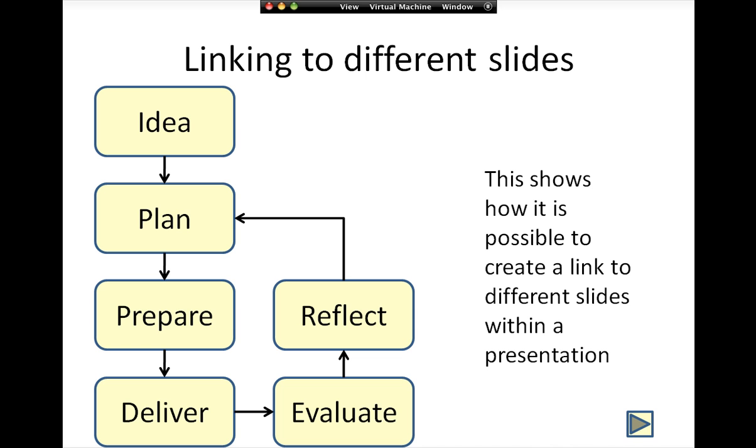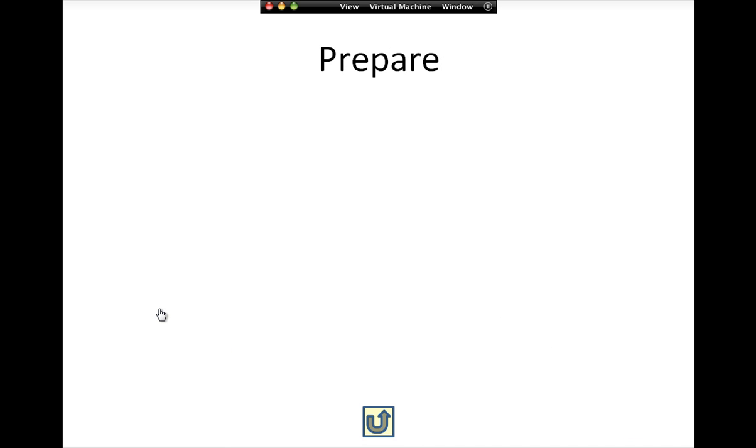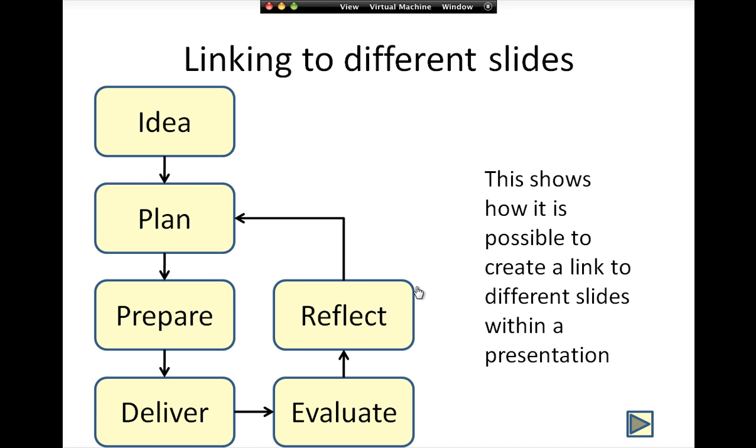Other things that we can do is we can link to different slides within the presentation. Now here's the diagram that I used in an earlier sequence of presentations. And what I've got here now is I've made a hyperlink from each of these boxes. So if I click on the prepare box, it will take me to a slide for prepare. Now I've not got any information here. You'd obviously add your own text or your own additional images. I'm just showing the mechanism working. And having gone here, I then need to go back, so I've got a back button. I can then look at say reflect, and I can go back. And the beauty of this is that we make our presentations not linear, so you can follow things in any order.